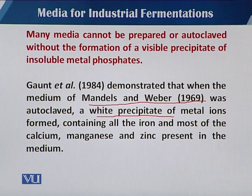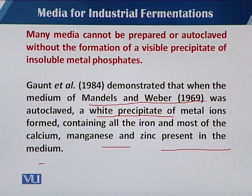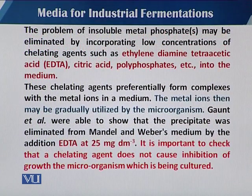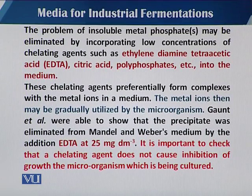That precipitate contained almost all the iron and most of the calcium, magnesium, and zinc present in the medium. In such cases, where there is a chance of precipitation and excess metal presence, we have to use some chelating compounds to overcome problems in which compounds and metal phosphates become insoluble.